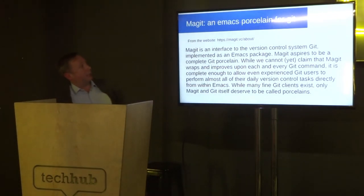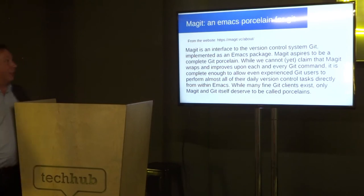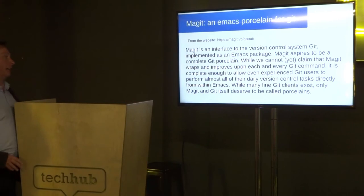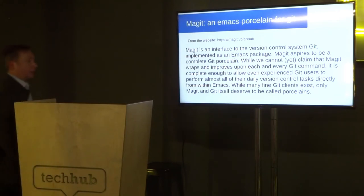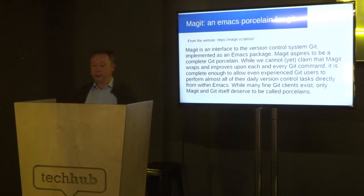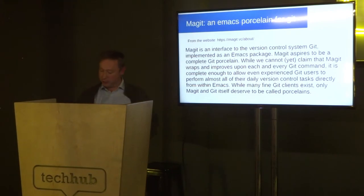So this is Magit, which is an Emacs porcelain for Git. This is their introduction on their website: "Magit is an interface to the version control system Git implemented as an Emacs package. Magit aspires to be a complete Git porcelain, so users can perform almost all of their daily version control tasks directly from within Emacs. While many fine Git clients exist, only Magit and Git itself deserve to be called porcelainers." This seems like a bold claim. So this is going to be a demonstration of my usage of Magit — in slides, because I wouldn't be quite stupid enough to try typing stuff with 30 people looking over my shoulder.